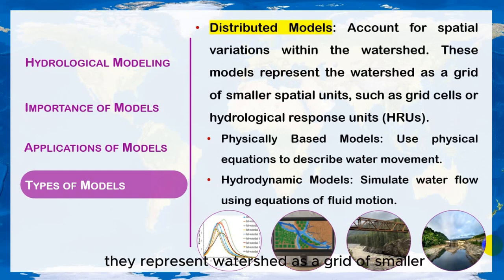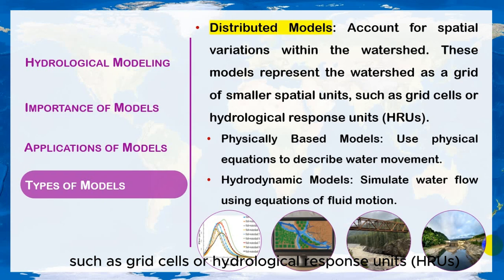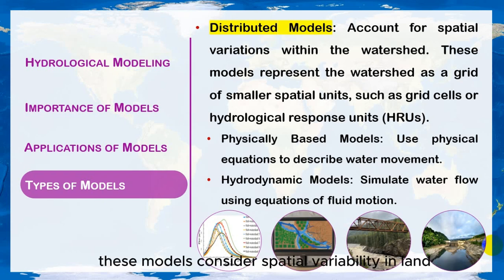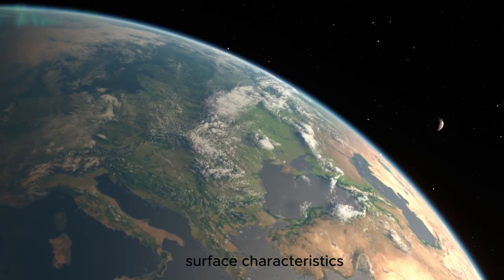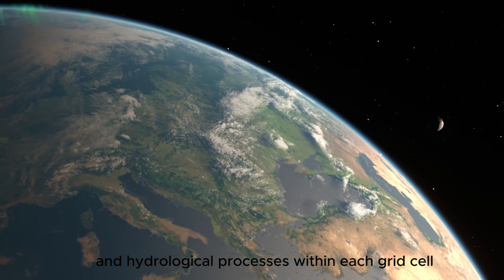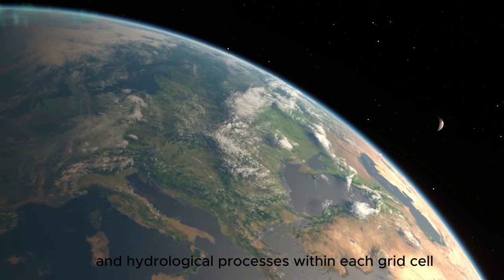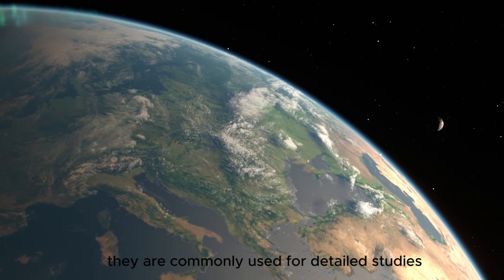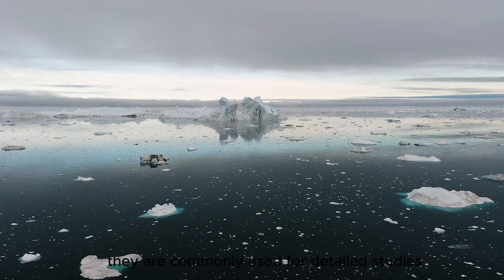Distributed models represent the watershed as a grid of smaller spatial units, such as grid cells or hydrological response units (HRUs). These models consider spatial variability in land surface characteristics, topography, and hydrological processes within each grid cell. They are commonly used for detailed studies.